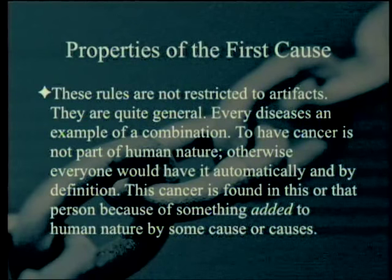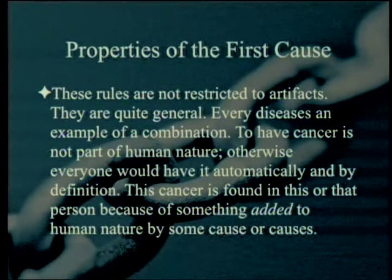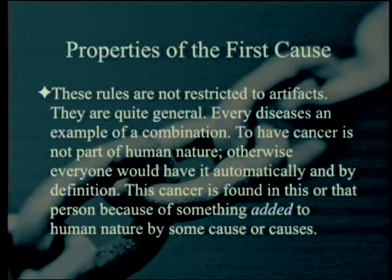These rules are not restricted to artifacts — they are quite general. Every disease is an example of a combination. To have cancer is not part of human nature; otherwise everyone would have it automatically and by definition. This cancer is found in this or that person because of something added to human nature by some cause or causes. That's kind of semi-persuasive, except that there are hereditary cancers — hereditary tendencies where you can predict someone is more likely to have cancer, for example a woman with BRCA1 or BRCA2 genes is more likely to have breast cancer. To be fair, yes, that still has a cause.